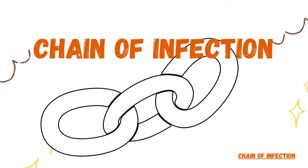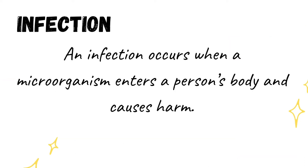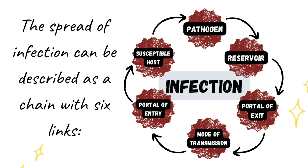Now let's talk about the chain of infection and how it happens. An infection occurs when a microorganism enters a person's body and causes harm. These infectious microscopic organisms — bacteria, viruses, or fungi — can multiply very quickly and are called pathogens. The spread of infection can be described as a chain with six links: pathogen, reservoir, portal of exit, mode of transmission, portal of entry, and susceptible host.